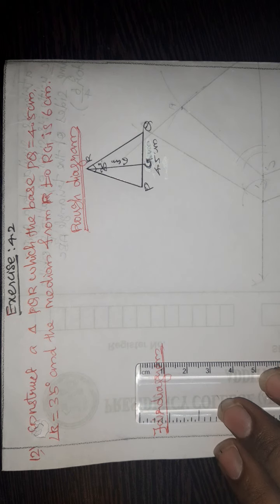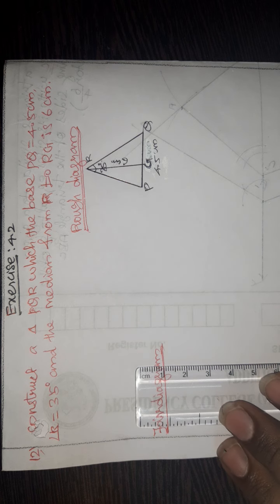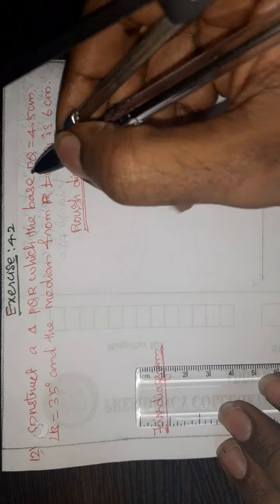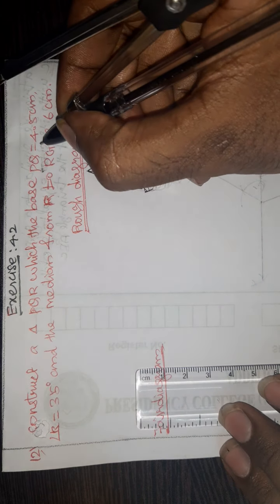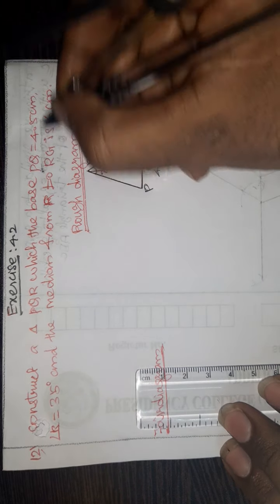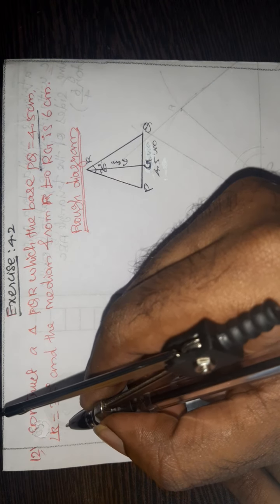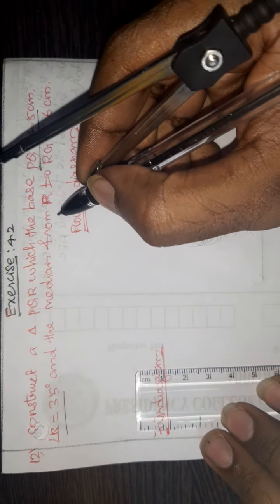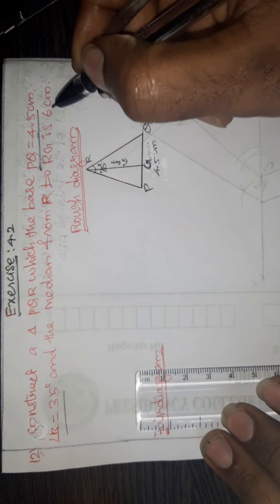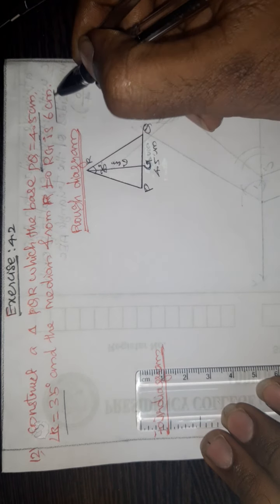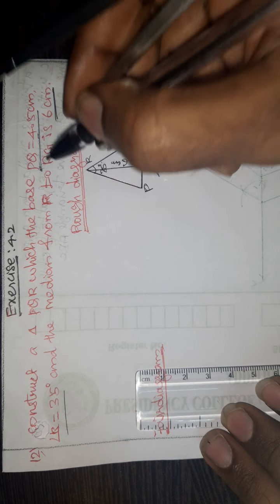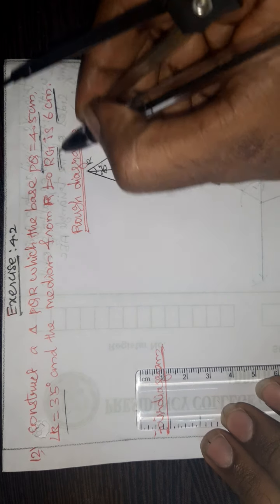Exercise 4.2, Question number 12. Construct a triangle PQR with base PQ equal to 4.5 centimeter, angle R equal to 35 degrees, and the median from R, that is RG, equal to 6 centimeter.